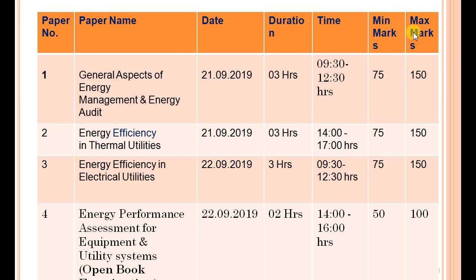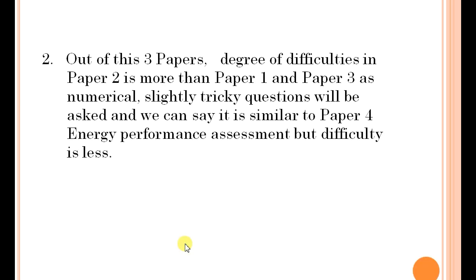Minimum passing marks are 75 and maximum marks you can score are 150. Friends, out of these three papers, the degree of difficulty in paper two is more than paper one and paper three, as paper two has slightly tricky and numerical questions.